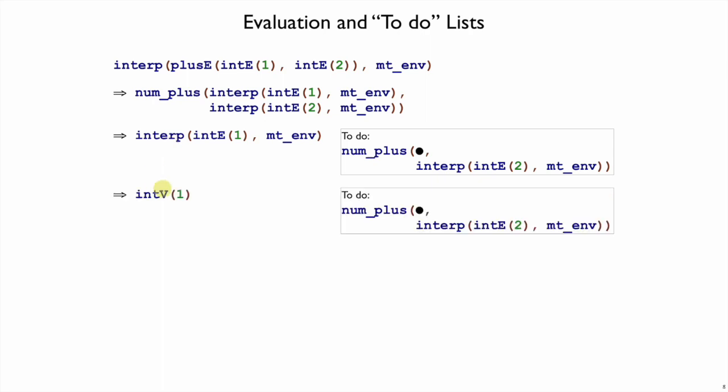Somehow interp will keep going, and it'll eventually give us an intV. Of course, that happens right away. But in any case, once we get a value, what we do with that is put it in place of the dot. So on my to-do list here, this big dot is a placeholder for a value that we're waiting for, and everything around the dot is our to-do list. That is all the things that we need to do in the future.